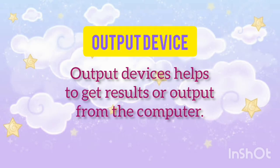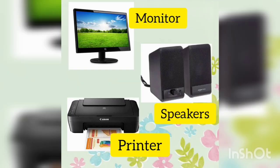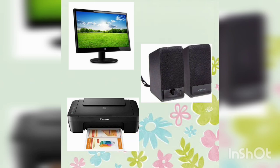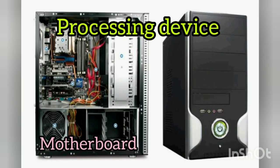Output devices help us to get results or output from the computer. Some output devices include monitor, speakers, and printer. The CPU box has a circuit board named motherboard.